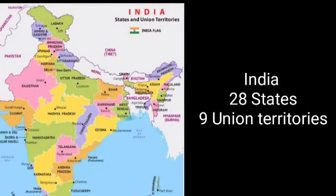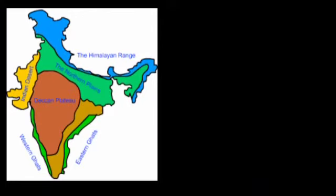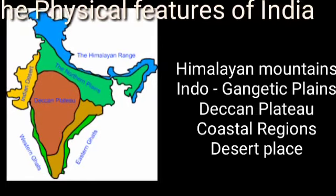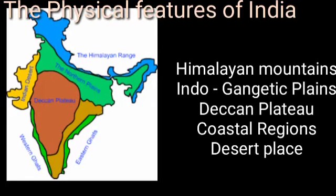India shares its boundaries with Pakistan, Afghanistan, China, Nepal, Bhutan, Bangladesh, and Myanmar. India consists of 28 states, nine union territories, and one national capital region, that is Delhi. The various landforms enable us to divide India into five distinct physiographic divisions, each with its own characteristics.